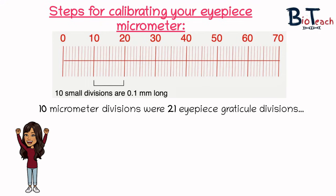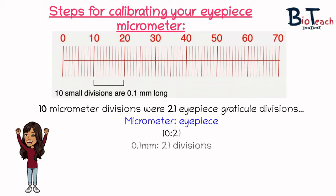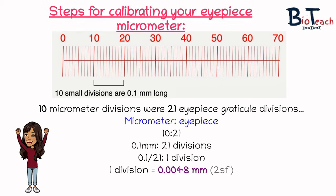We have said that 10 micrometer divisions correspond to 21 eyepiece graticule divisions, and this is set up like a ratio so we can easily work out what each division is. So if 10 micrometer divisions equal 21 eyepiece graticule divisions, and we know that 10 divisions is 0.1 millimeters long, then 1 eyepiece graticule division must be 0.1 divided by 21, which is 0.0048 millimeters to 2 significant figures.